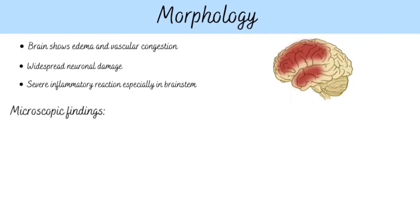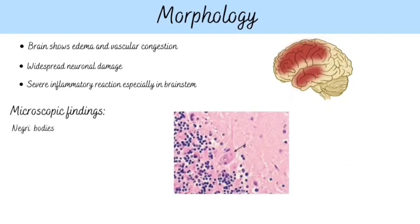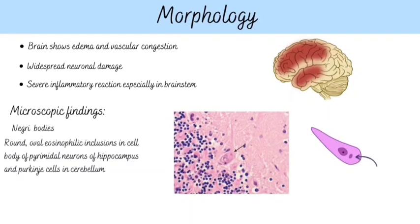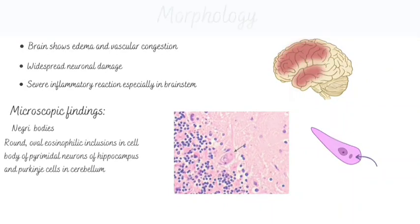Microscopic findings. It shows Negri bodies, which are round, oval, and eosinophilic inclusions in the cell body of pyramidal neurons of the hippocampus and Purkinje cells of the cerebellum.